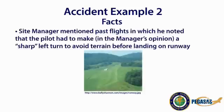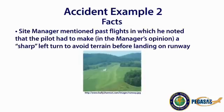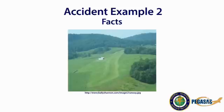The site manager mentioned past flights in which he noted that the pilot had to make, in the manager's opinion, a sharp left turn to avoid terrain before landing on the runway. This is a picture taken from the final approach course, and as you can see, the terrain is varying and the pilot would need to modify the approach path.